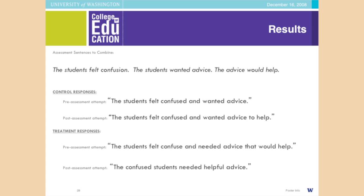So the pre-assessment asked them to combine these sentences — changing the word forms: 'The student felt confusion. The students wanted advice. The advice would help.' — into one sentence. A pre-assessed attempt from the control group: 'The students felt confused and wanted advice.' Post: 'The students felt confused and wanted advice to help.' Not a whole lot of change.